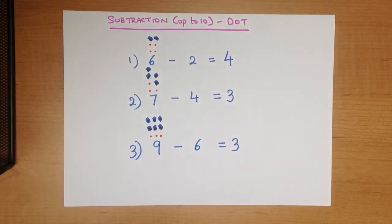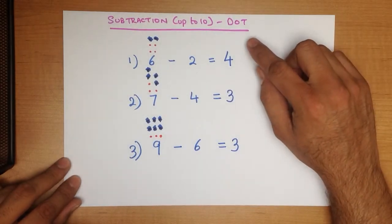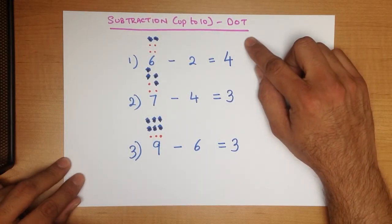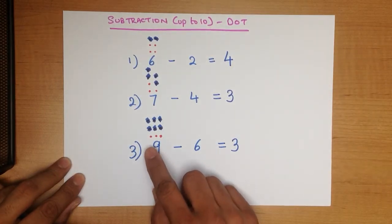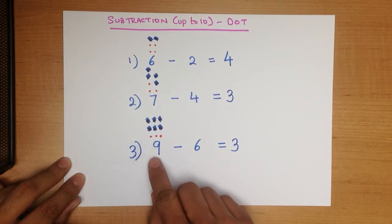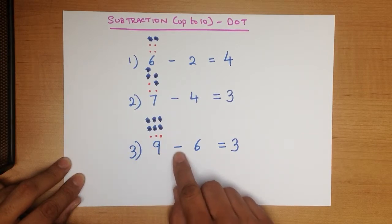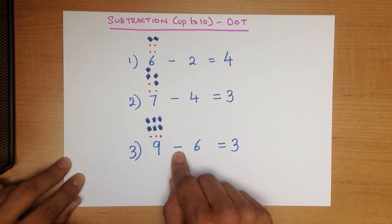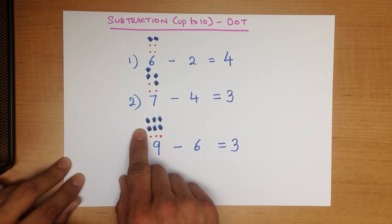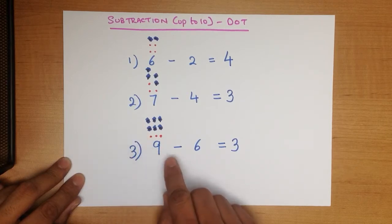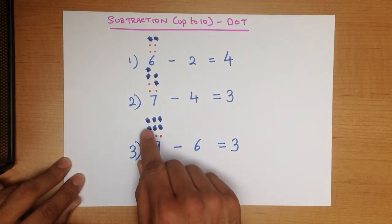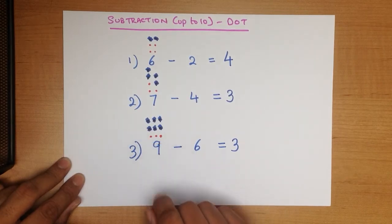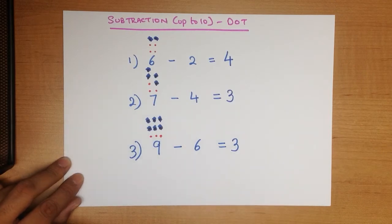And there we have it. This is subtraction of numbers up to 10 using the dot method. Always remember, look at the first number. Above it, put the number of dots that the first number represents. We are minusing, subtracting, we are taking away. So we are going to cross out a few of the dots. How many are we going to cross out? That will be over here. In this example, it's 6. We cross those out. However many dots are left will give us the answer.